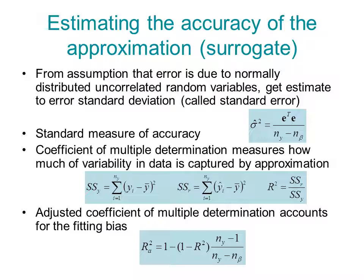And there is also an adjusted coefficient of multiple determination, which essentially compensates for the fact that if you have a small number of data points, you will tend to fit them very well and get an over-optimistic notion of how good your approximation is.